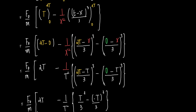Now substituting the limits: the first integral gives [t] from 0 to 2T = 2T. For the second integral, (1/x²) × [(t - x)³/3] from 0 to 2T. Substituting upper limit: (2t - x)³/3, and lower limit: (0 - x)³/3 = (-x)³/3.